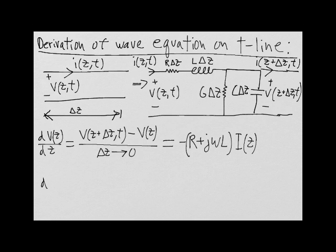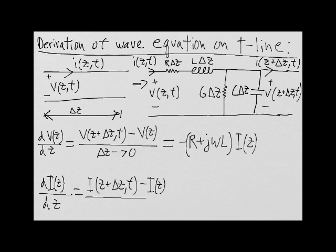Similarly, the derivative of the current with respect to z is equal to the difference between the output current and the input current as delta z approaches zero. And again, from circuit theory, we know that this is equal to minus G plus j omega C multiplied by V of z.